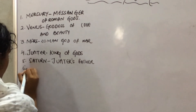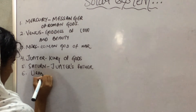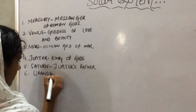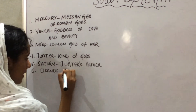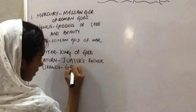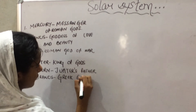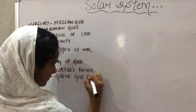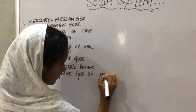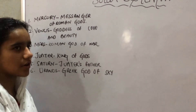Our next planet is Uranus. Uranus is named after the Greek god of sky. It is the only planet that is named after a Greek god.